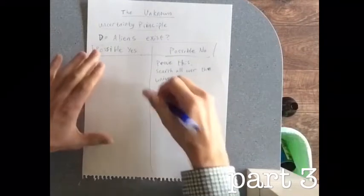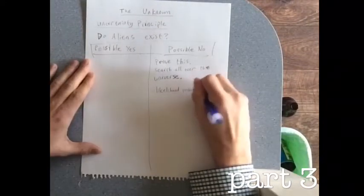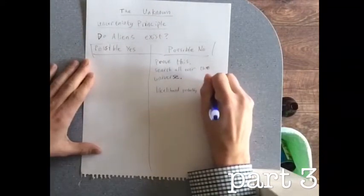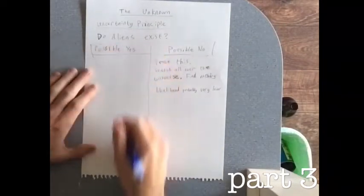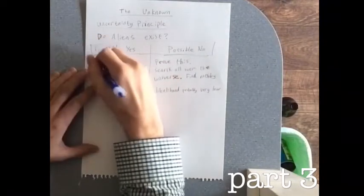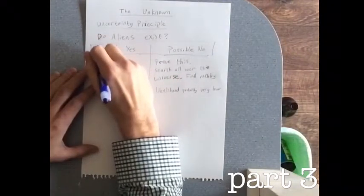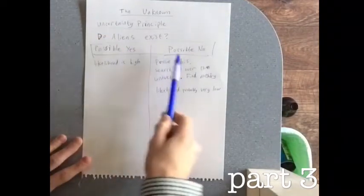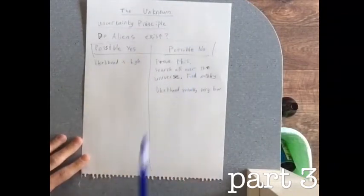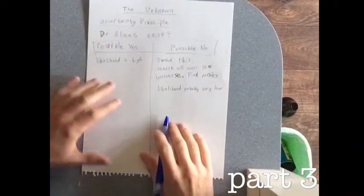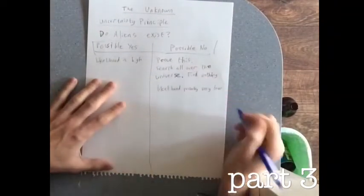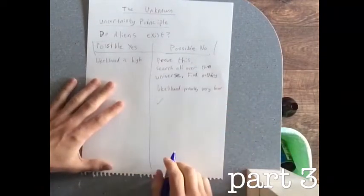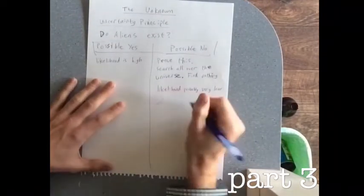So the likelihood of proving no aliens is probably very low, which implies the probability that aliens do exist is high. Both possibilities are here — probability of no is low, probability of yes is high. And even if you went and checked and found nothing, you'd only have done that one time.